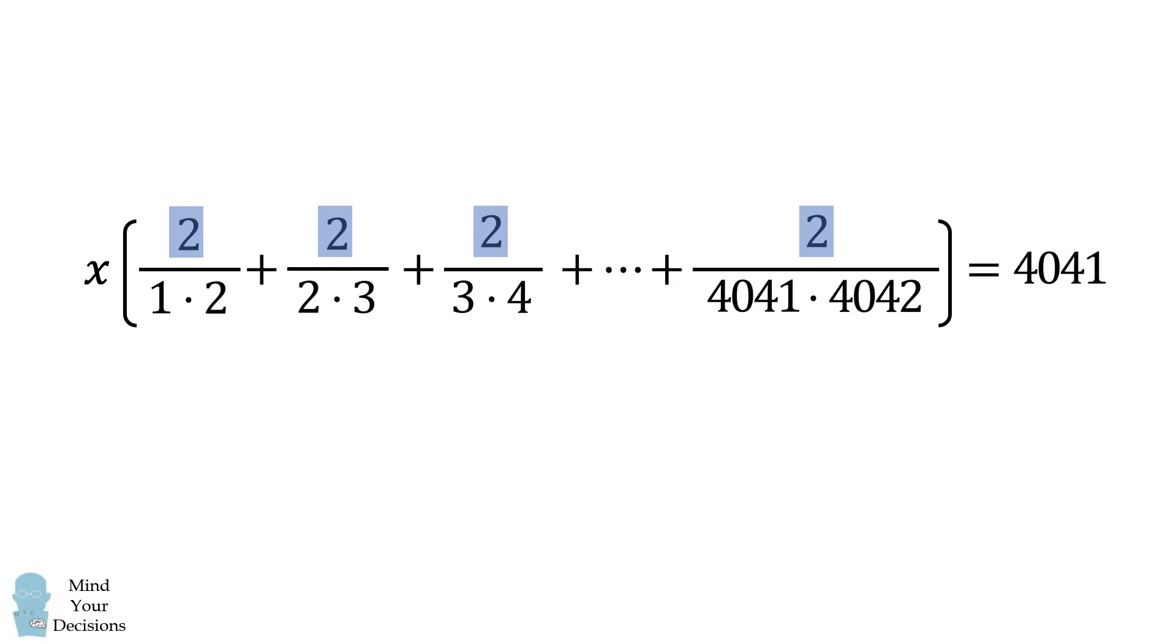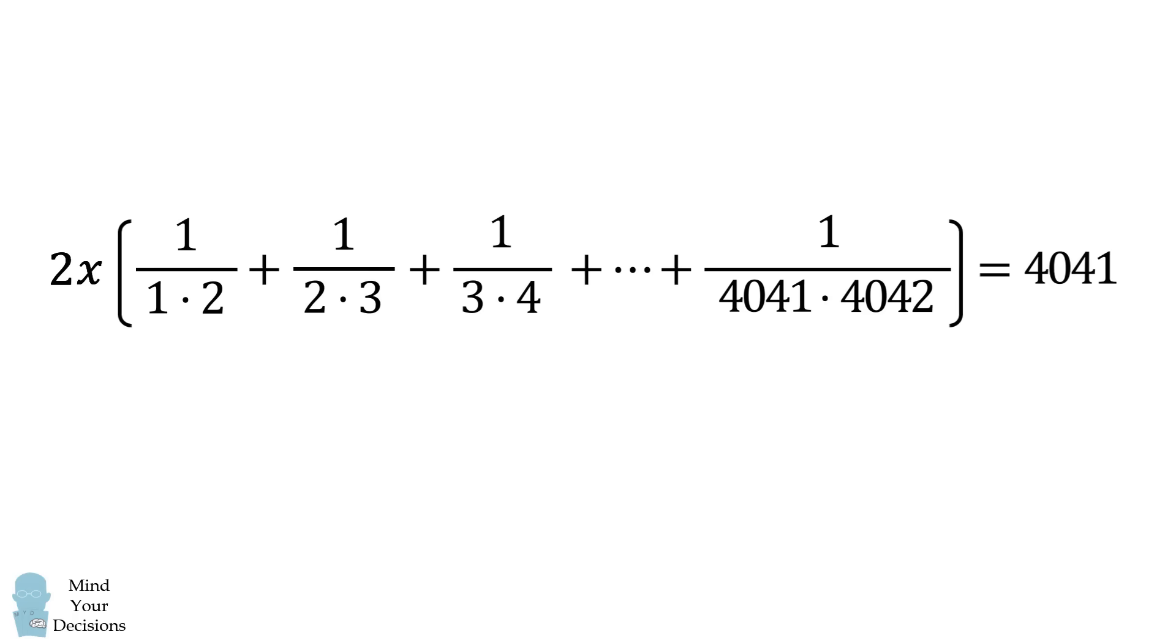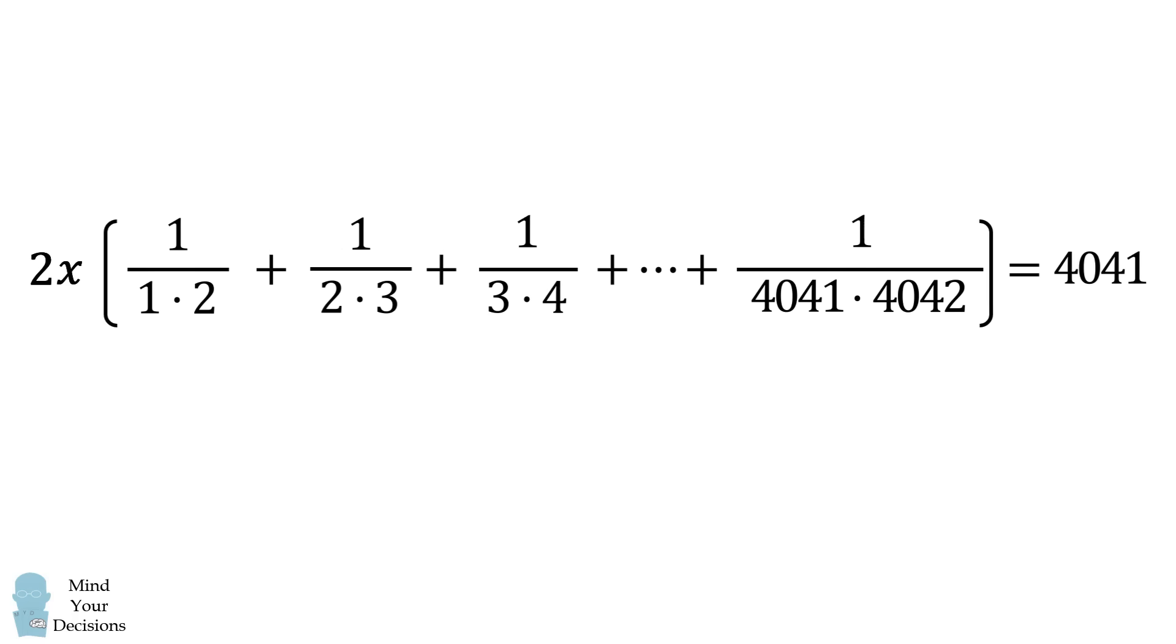From here, we can factor out a 2 from every single numerator. We will now look at the first fraction. We'll see we have 1 divided by 1 multiplied by 2, and we'll use our partial fraction decomposition. This will be equal to 1 over 1 minus 1 over 2.